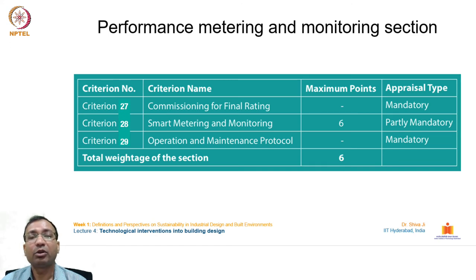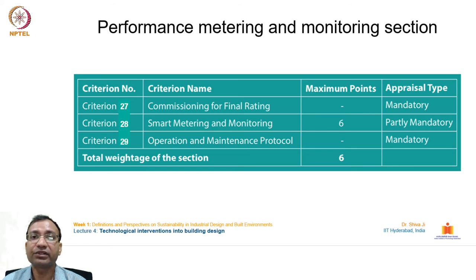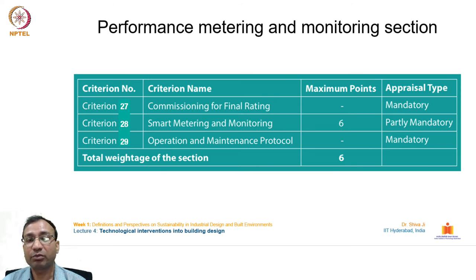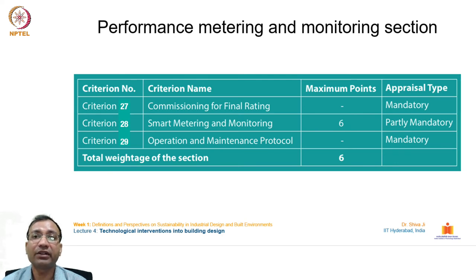The performance metering and monitoring section is dedicated to evaluating and monitoring building performance over time — tracking energy and resource consumption. It has three criteria: commissioning for final rating, smart metering and monitoring (6 points), and operation and maintenance protocol. Smart metering enables constant monitoring so that high consumption or leakages can be detected and rectified promptly.